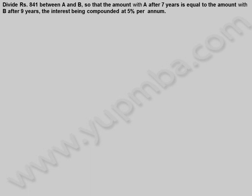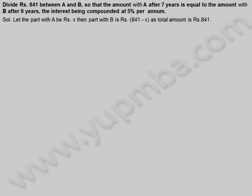Divide Rs. 841 between A and B, so that the amount with A after 7 years is equal to the amount with B after 9 years, the interest being compounded at 5% per annum. Solution: let the part with A be X rupees, then part with B is 841 minus X rupees, as total amount is 841 rupees.